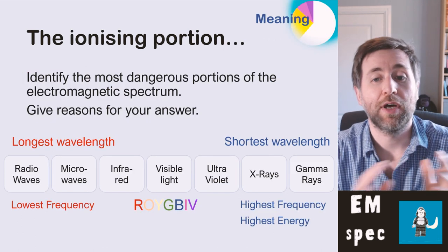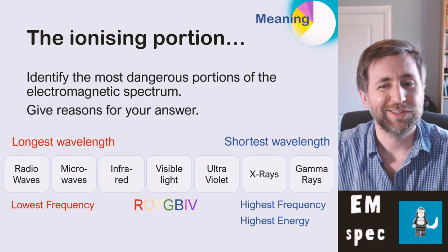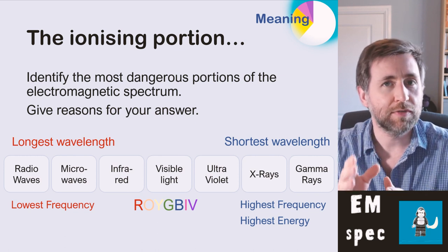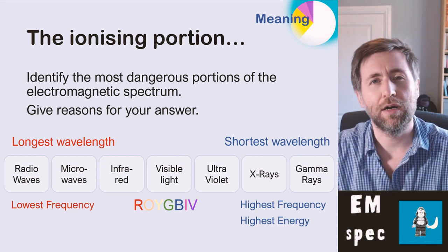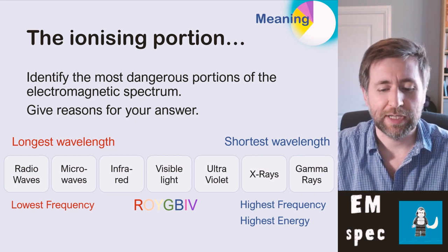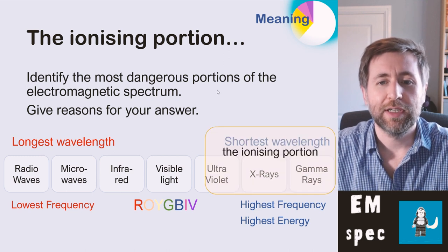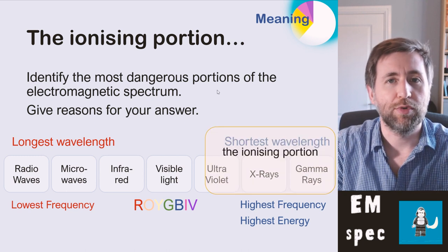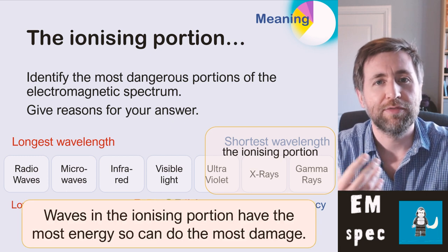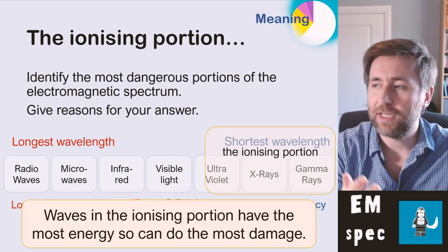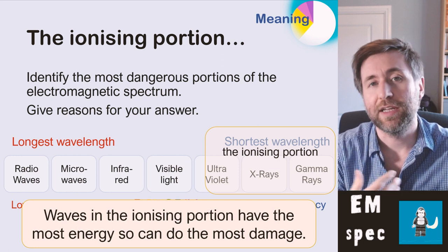Let's talk about the high energy end — the ionizing portion. The ionizing portion is somewhere in the middle of the ultraviolet. So some ultraviolet rays are non-ionizing, and some are ionizing, all the way up to gamma rays. The ultraviolet to X-ray portion has short wavelength and high frequency, so they are ionizing.